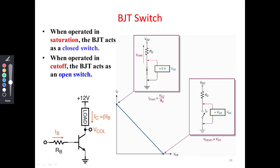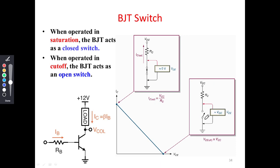When the transistor is acting in the cutoff region, it acts as an off or open switch position. The transistor is acting in the open switch position, and at that time the current cannot flow through this open circuit path.